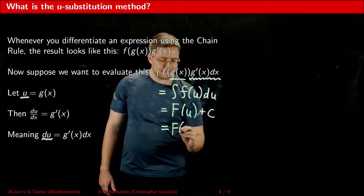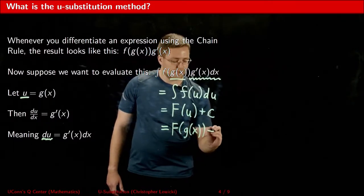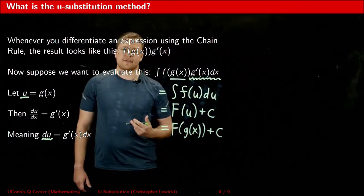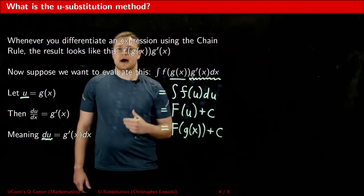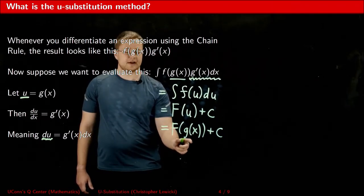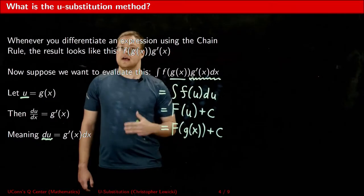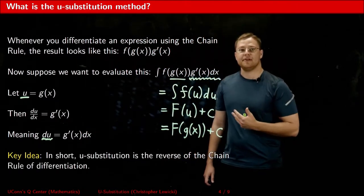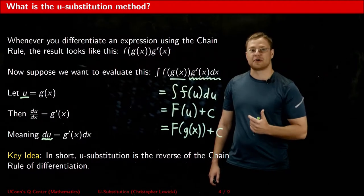The integral is equal to the integral of lowercase f of u du, which is also equal to capital F of u plus a constant c. Since we started off in terms of x rather than u, I'm going to substitute back in g of x for u to get capital F of g of x plus my constant c. If I were to take the derivative of this function, I'd need the chain rule — this is not a coincidence, because the u-substitution method is the chain rule in reverse.